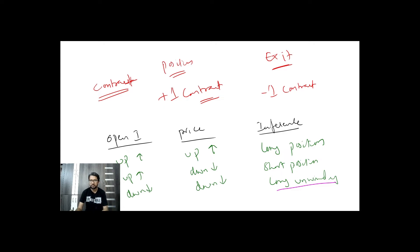So now we have four scenarios: long position buildup, short position buildup, long unwinding, and short covering. For short covering, you build a short position and then close that position — that is short covering. We use these to set up support and resistance.